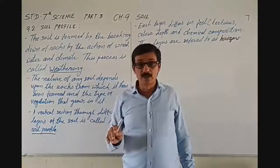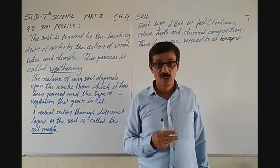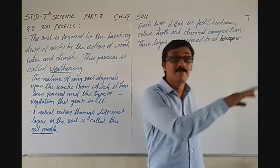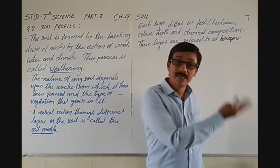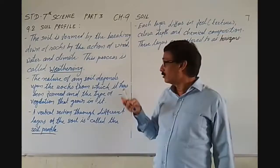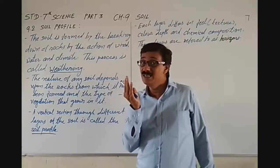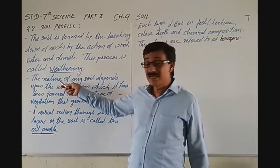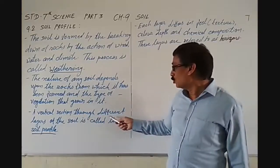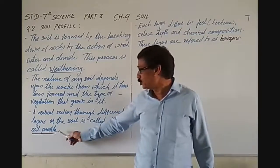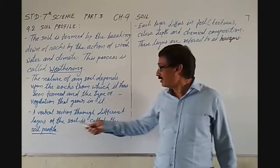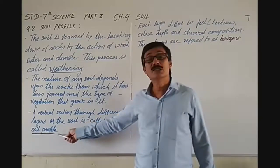Each and every soil has its own nature. You can see the soil near the sea area and coastal areas, or near river banks — you will find different types of plants growing in that soil. A vertical section through different layers of the soil is called the soil profile.